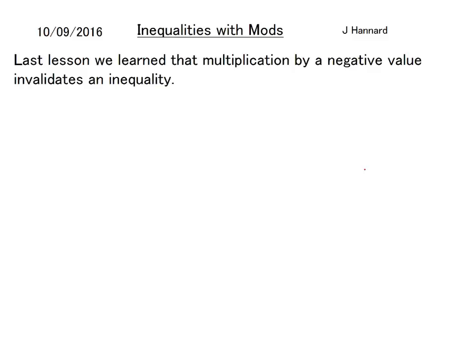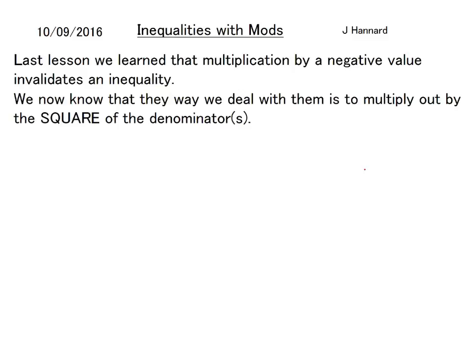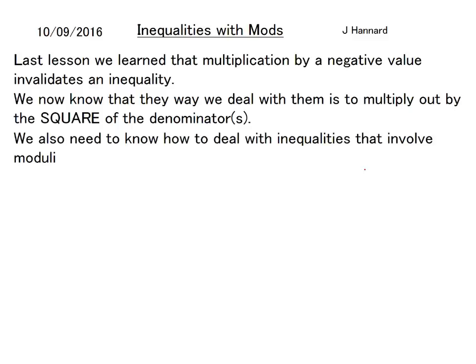So last lesson we learned that multiplication by a negative value invalidates an inequality. It simply turns the sign the other way. We now know that the way we deal with them is to multiply out by the square of the denominators. We also need to know how to deal with inequalities that involve moduli.